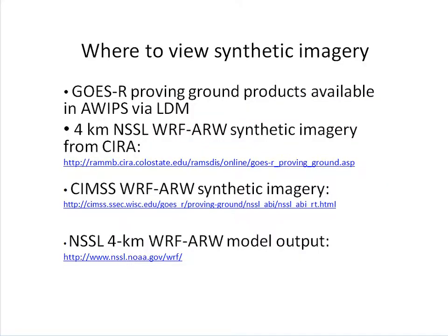The WRF ARW imagery is available as part of the GOES-R Proving Ground products in AWIPS via the LDM. The imagery is also available on the web at the CIRA website — select the synthetic imagery from the suite of GOES-R Proving Ground products. SIMS also makes the imagery available at the URL shown. The model output fields from the WRF ARW model are also available online.